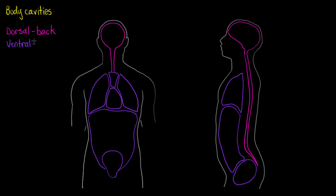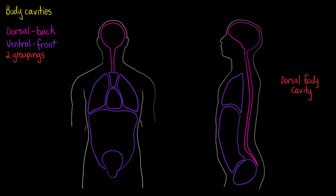When examining the body there will be two major subdivisions of the cavities and we're going to learn about both of them, but for now we'll start with the dorsal. The dorsal cavity is located on the back of our body, and it houses and protects our brain and spinal cord, which is otherwise known as our central nervous system — obviously something very important to protect.